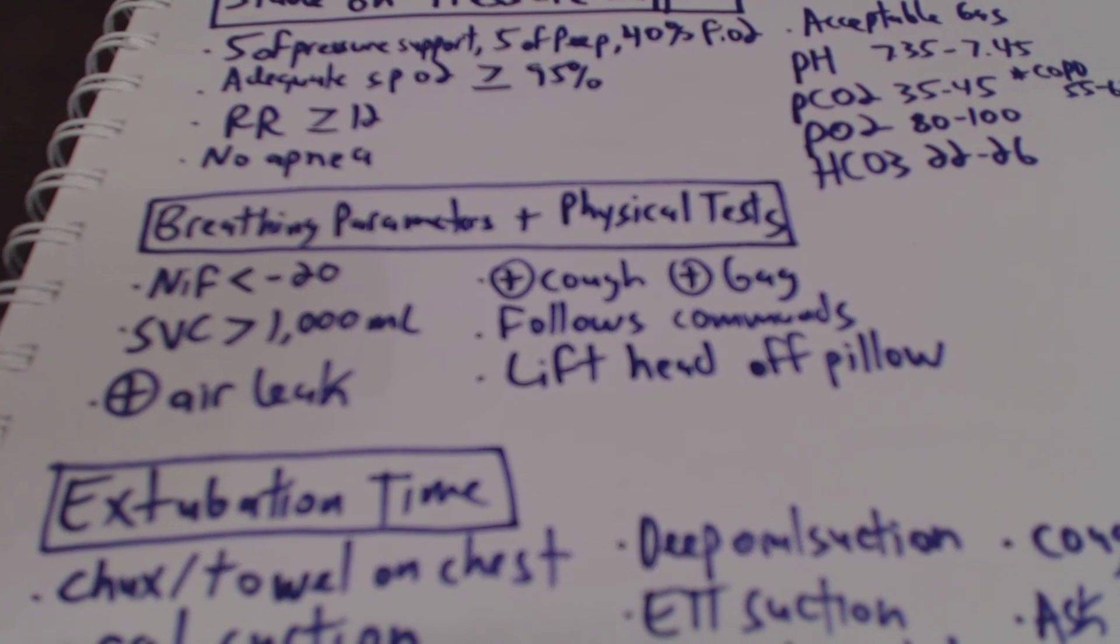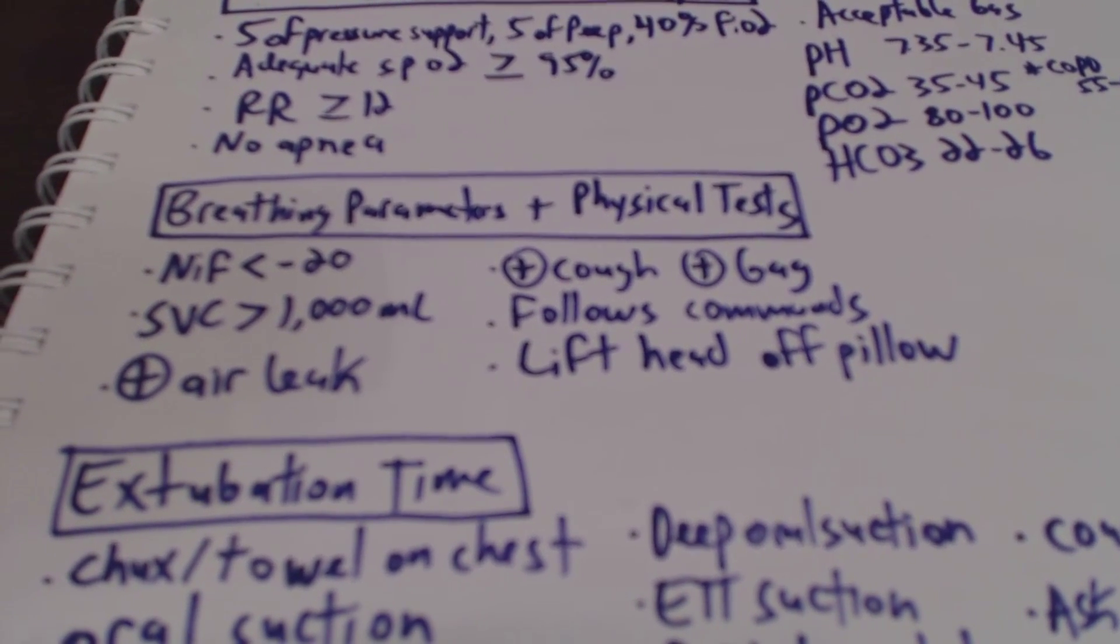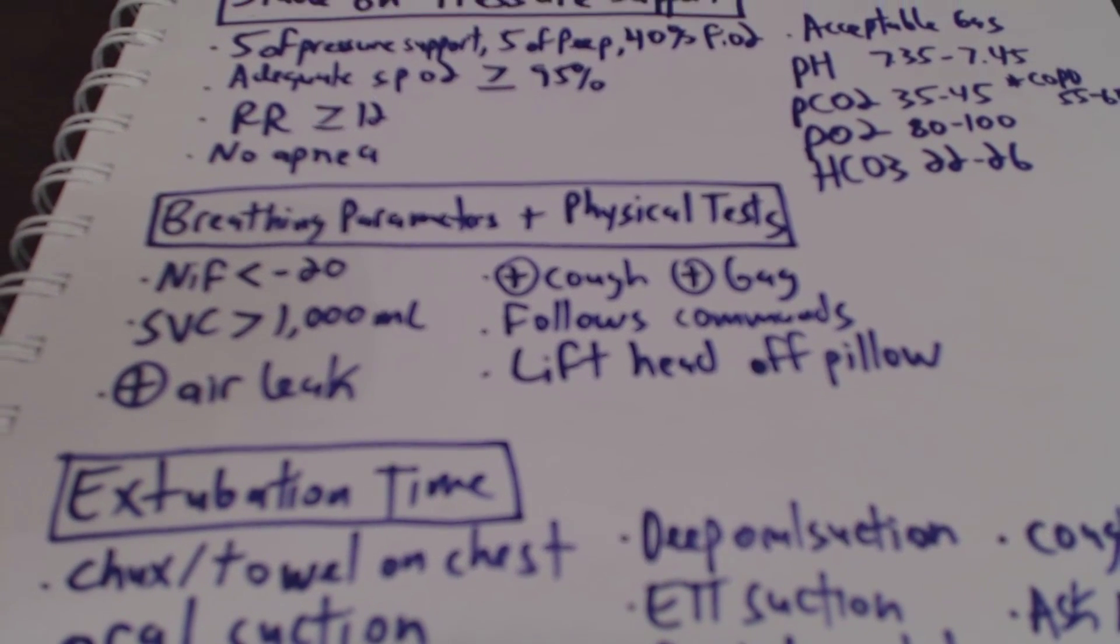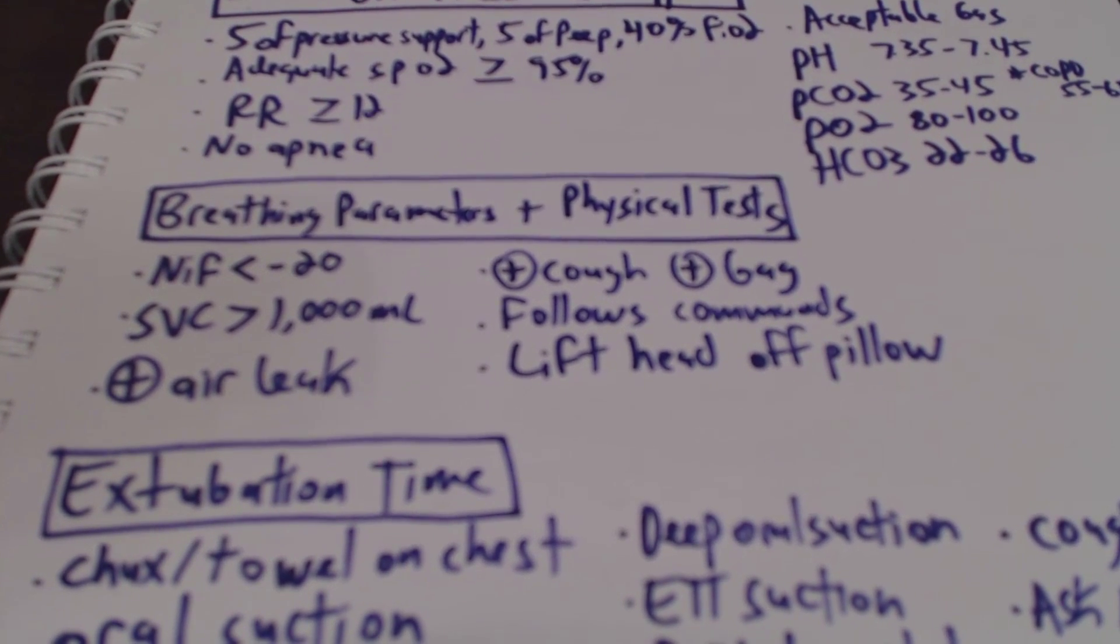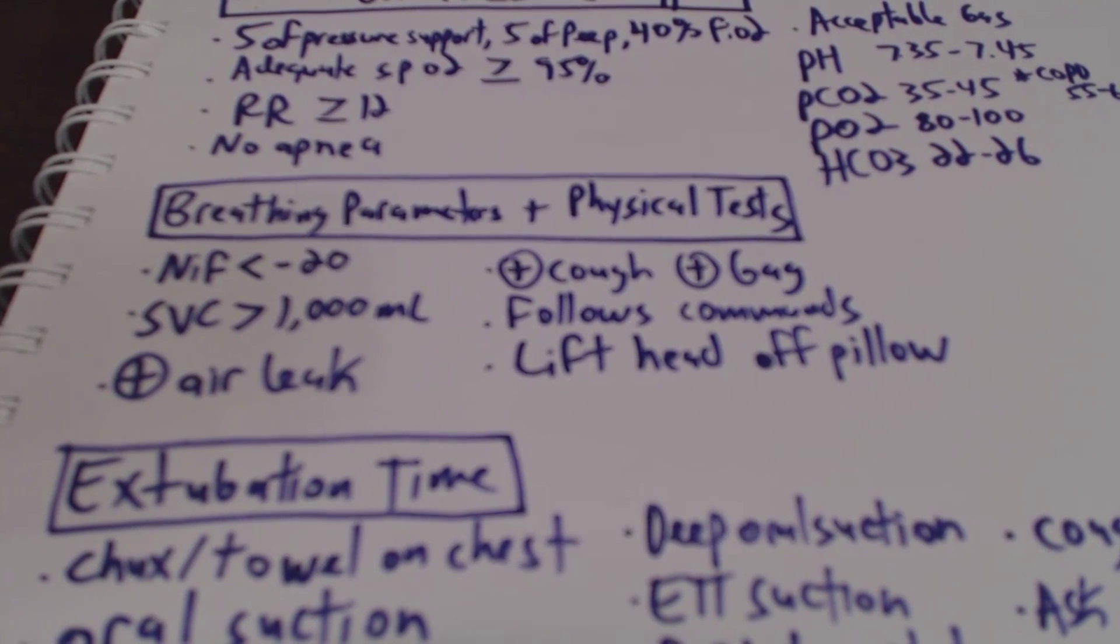Once again, we're always going to look at the patient's condition and what their past medical history is, and sometimes we'll allow for an SVC of 800, but usually the golden mark is 1,000 or greater. We also want to make sure that the patient has a positive air leak. By that, I mean we deflate the endotracheal tube cuff and want to hear some gurgling, just because if there's upper airway edema and we don't hear that, we're going to have issues if we pull the tube and the upper airway closes, and then we don't have a patent airway.